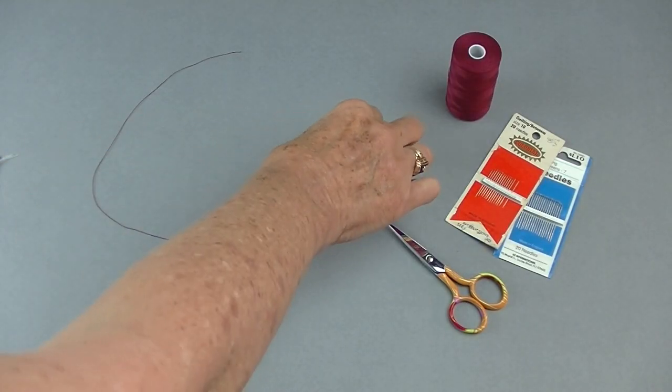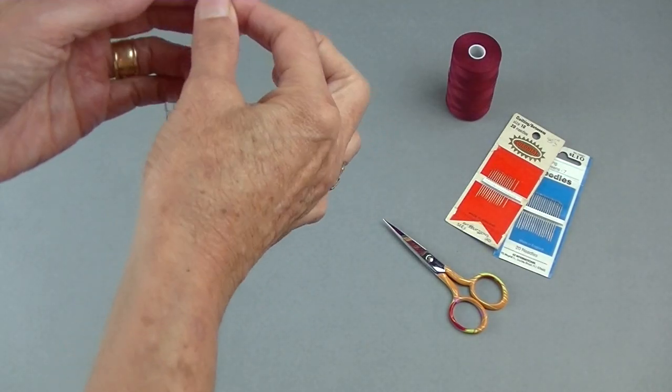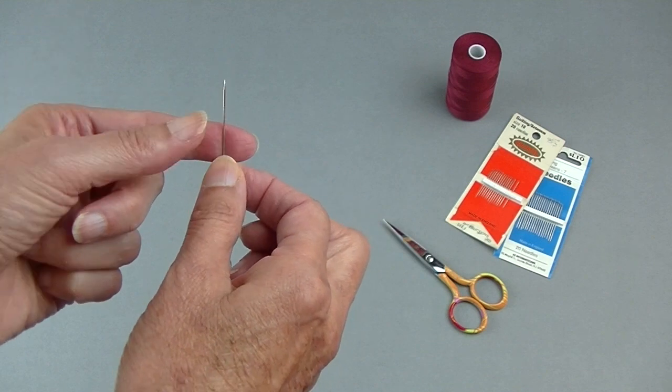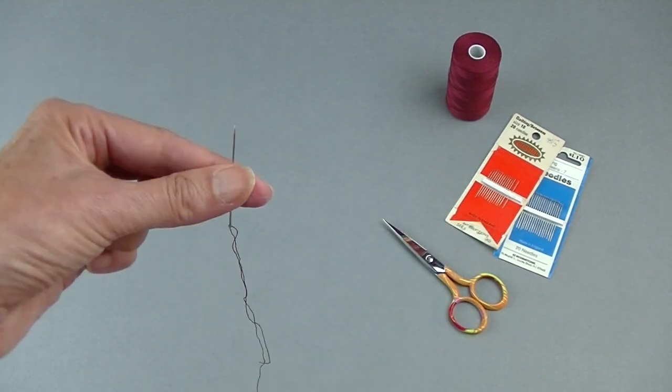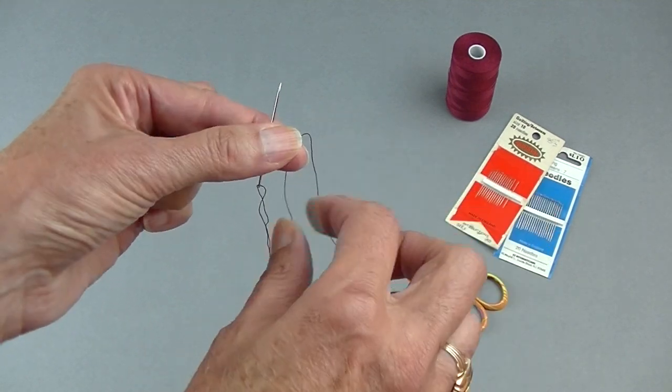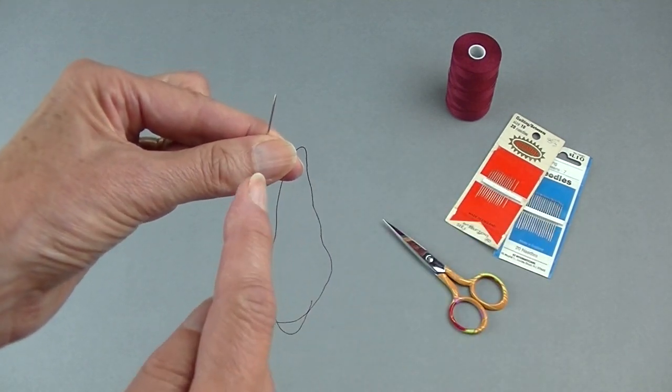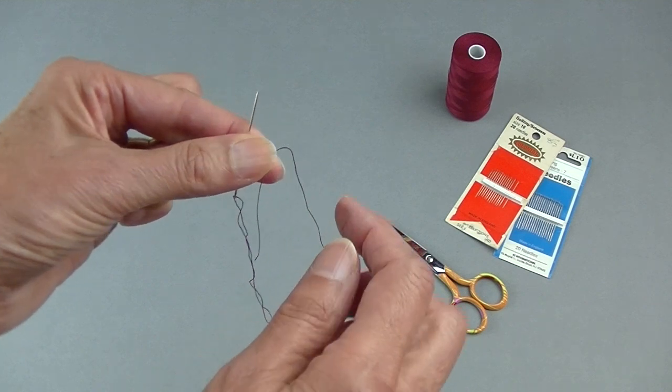Here's a quick way to knot your single strand of thread. Place the needle between your first finger and thumb with the sharp point up. Take the tail, make a loop, and bring it between your thumb and your first finger.